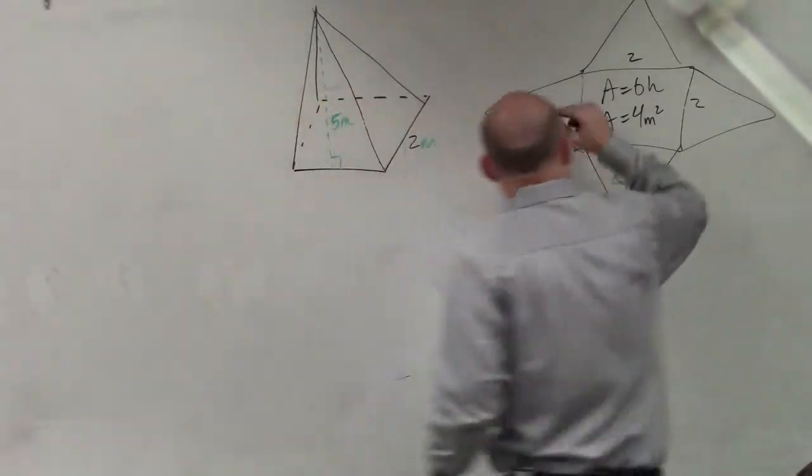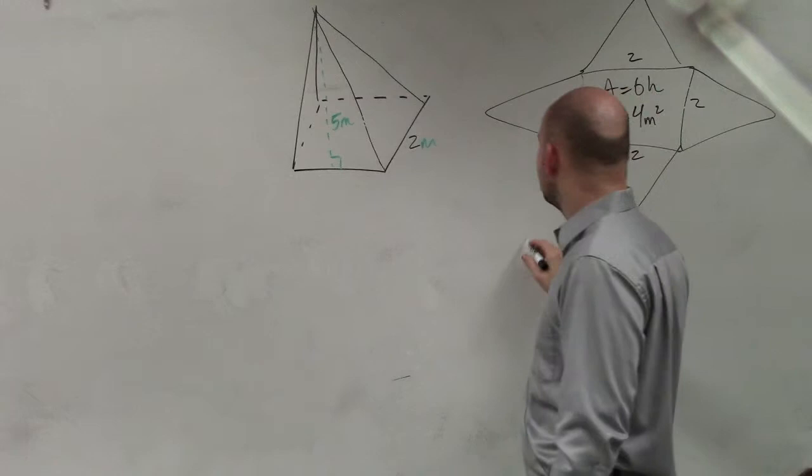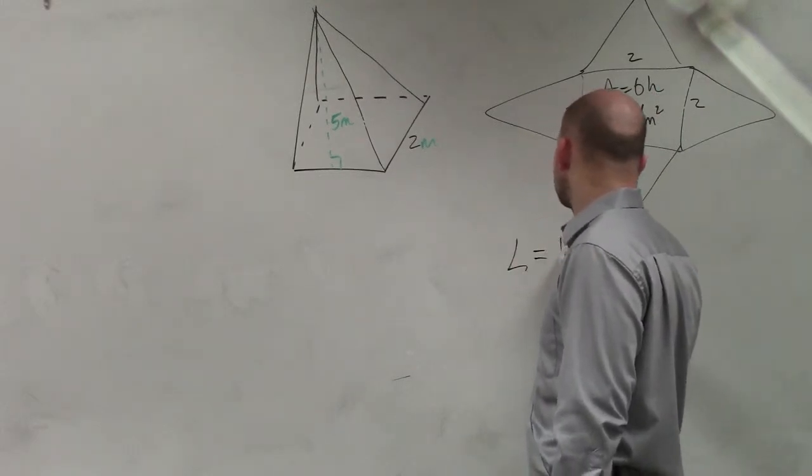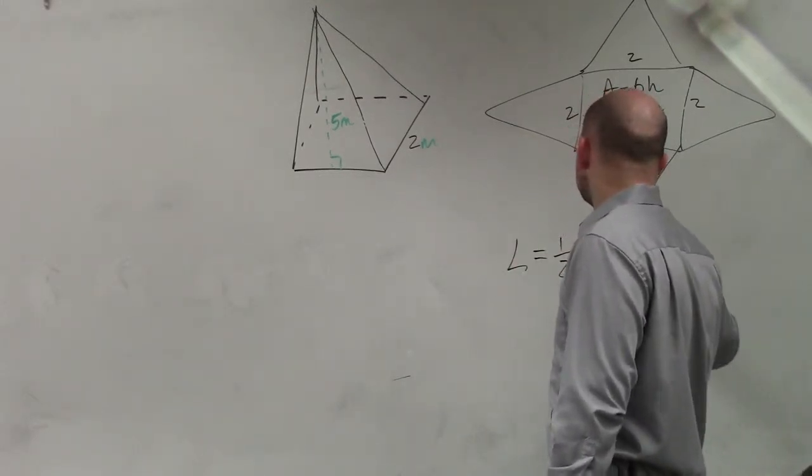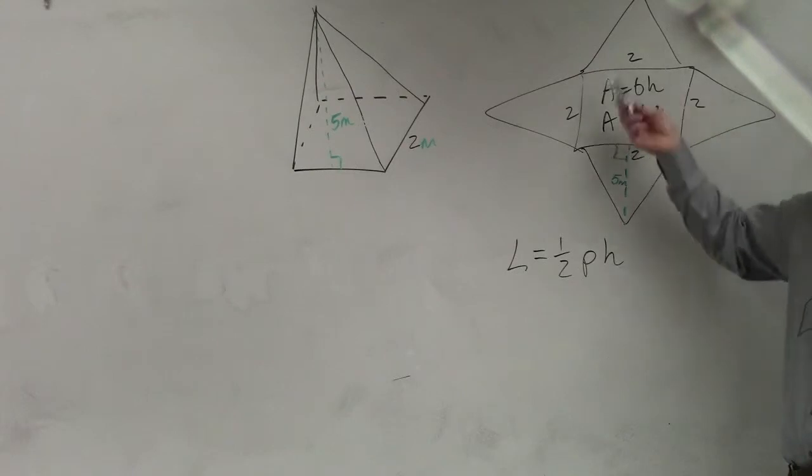So remember, add up all these sides is what we call the lateral surface area. And the lateral surface area is equal to 1 half perimeter times the height, where that represents the height of your sides. So now let's find the perimeter. Remember, the perimeter is adding up all the sides.